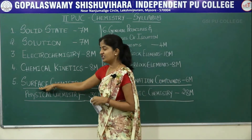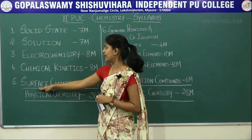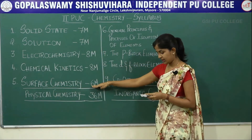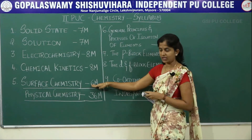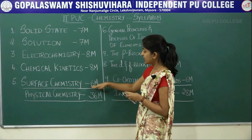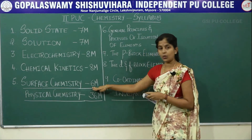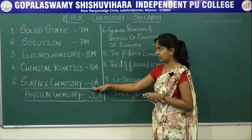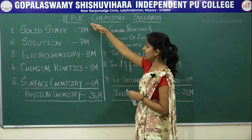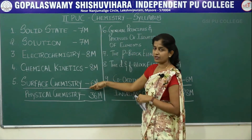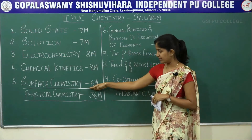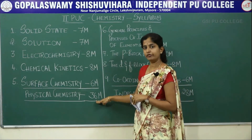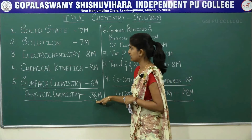The last chapter of the physical chemistry branch is surface chemistry. It has a total weightage of 6 marks, divided into a 1-mark question and a 5-mark question. In total, the 5 chapters of physical chemistry carry a combined weightage of 36 marks.